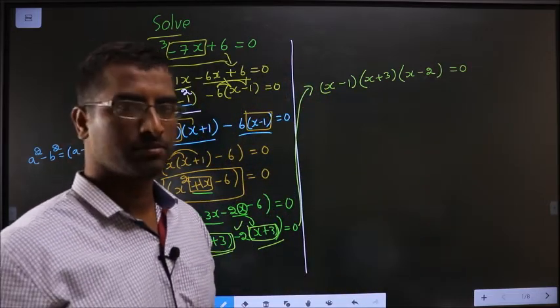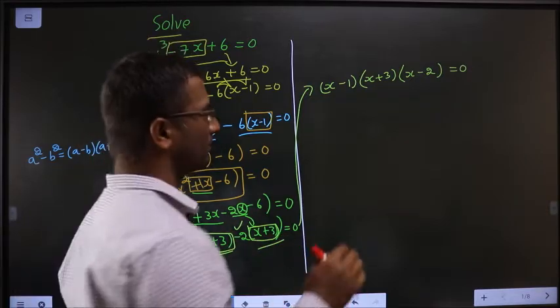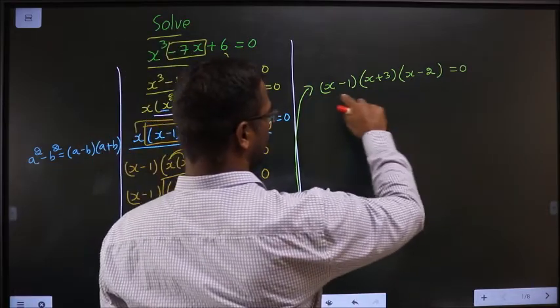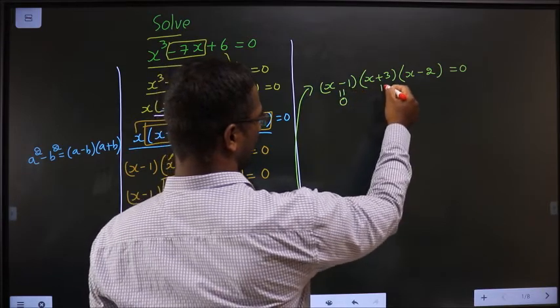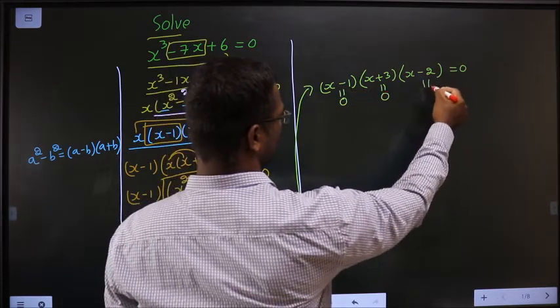How do I get x? Take each bracket equal to 0. This entire product should be equal to 0. That could only happen if this equal to 0, or this equal to 0, or this equal to 0.